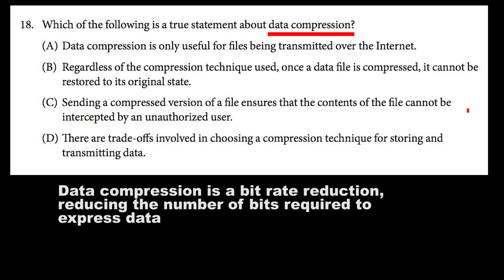Let's take a look at D. There are trade-offs involved in choosing a compression technique for storing and transmitting data. The word that jumps out there is 'trade-offs.' Trade-offs means nuance — it's talking about pros and cons of both sides and shows more subtlety. Not only is the question addressed by talking about the different compression techniques, but it's also nuanced in that it talks about trade-offs. Therefore, D is our best option.